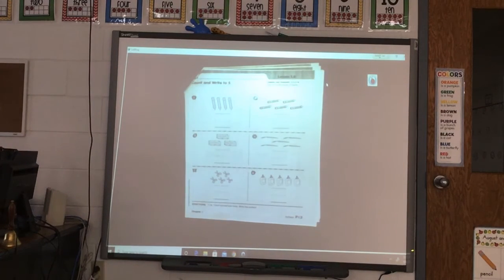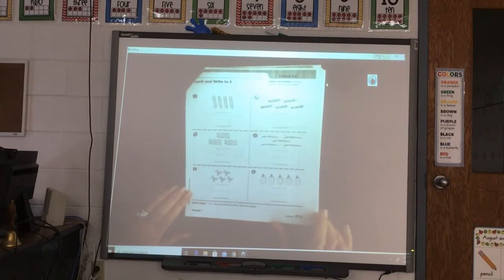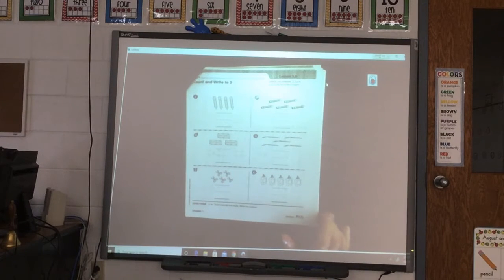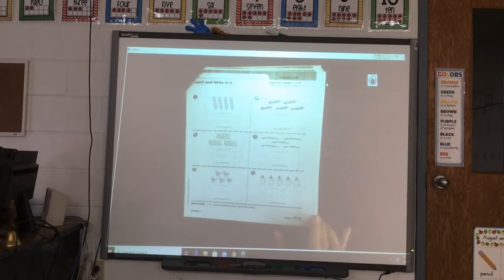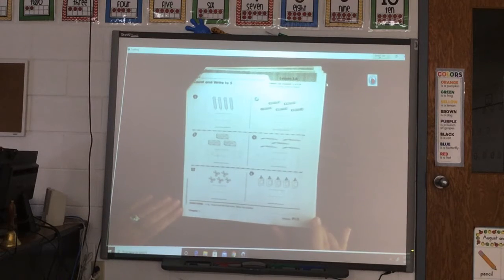Alright Kindergarten, we are going to review our numbers we've been working on the last few days. We've worked on numbers 1, 2, 3, 4 and 5. We are going to do some counting today and practice writing our numbers. So you can get your math workbook out and a pencil, and you can work right along with me if you are ready.